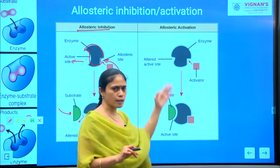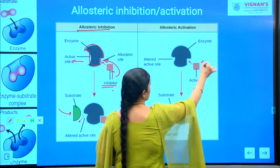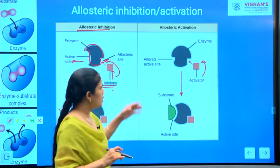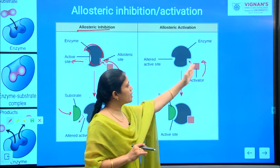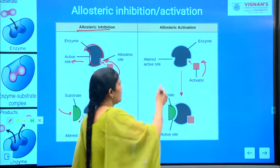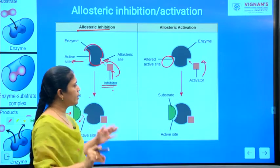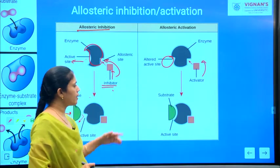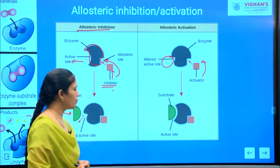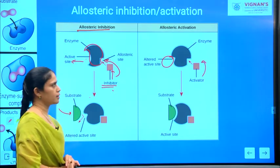Coming to the allosteric activation process, we now call it an activator. Once this allosteric activator binds to the allosteric site of the enzyme, the active site is altered in such a way that it effectively binds to the substrate molecule, resulting in effective production of the product.